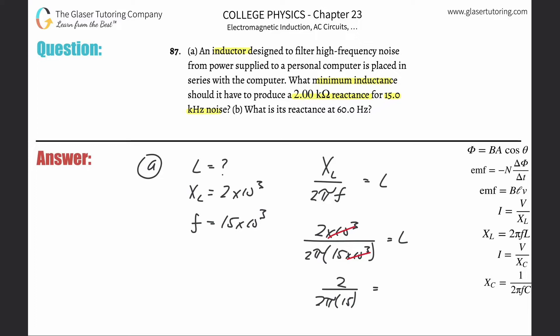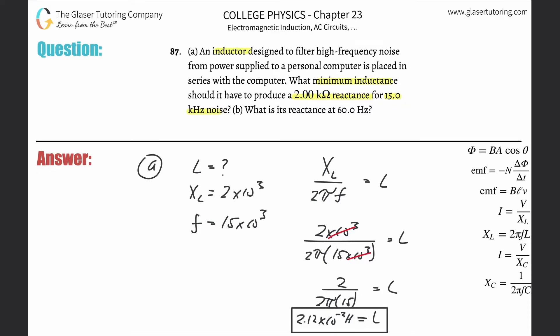Let's calculate: this is basically 1 divided by pi times 15, which works out to be 2.12 times 10 to the minus 2 henries. That is the inductance — that's the answer to letter A.